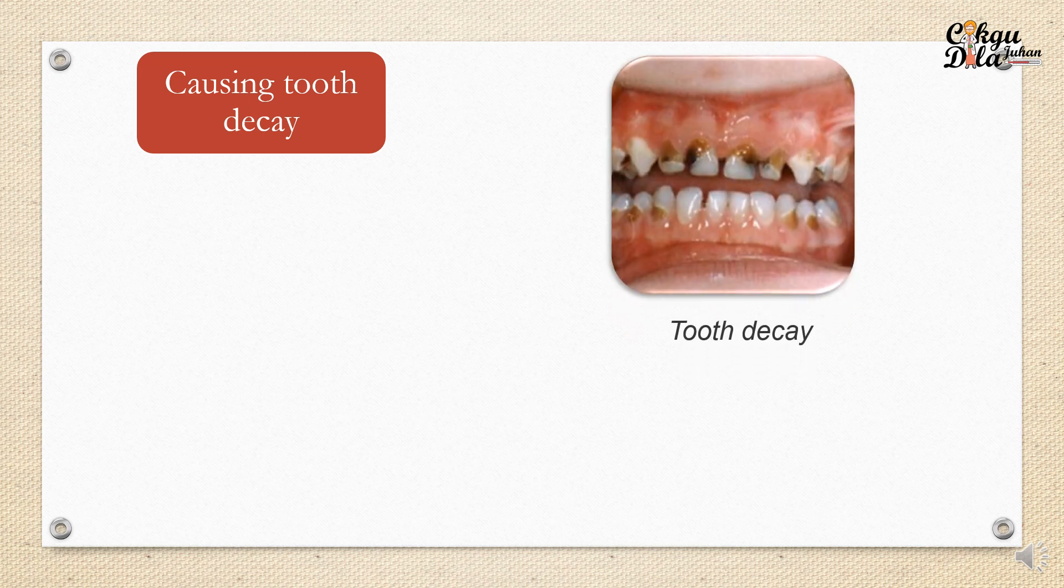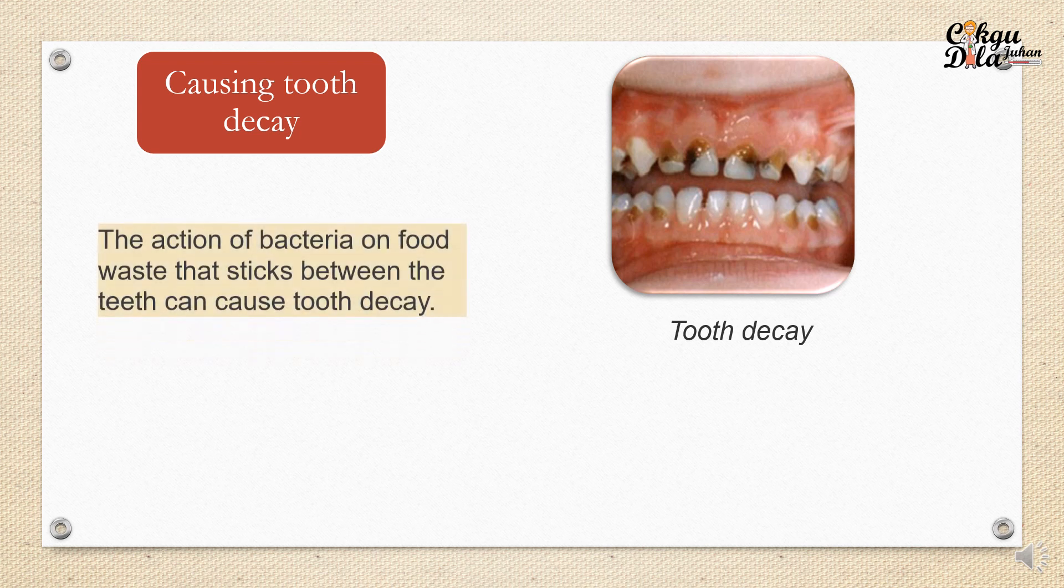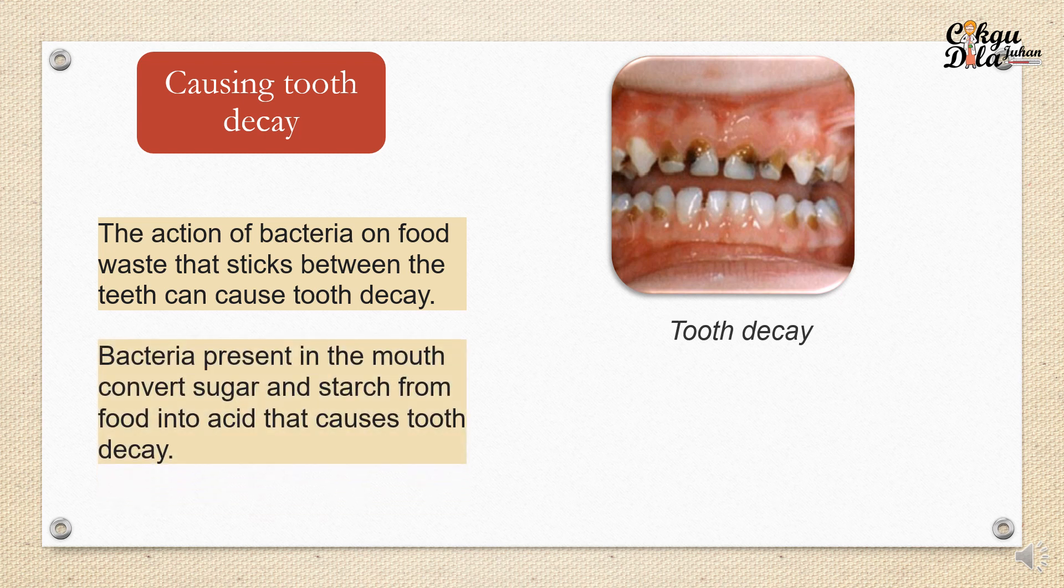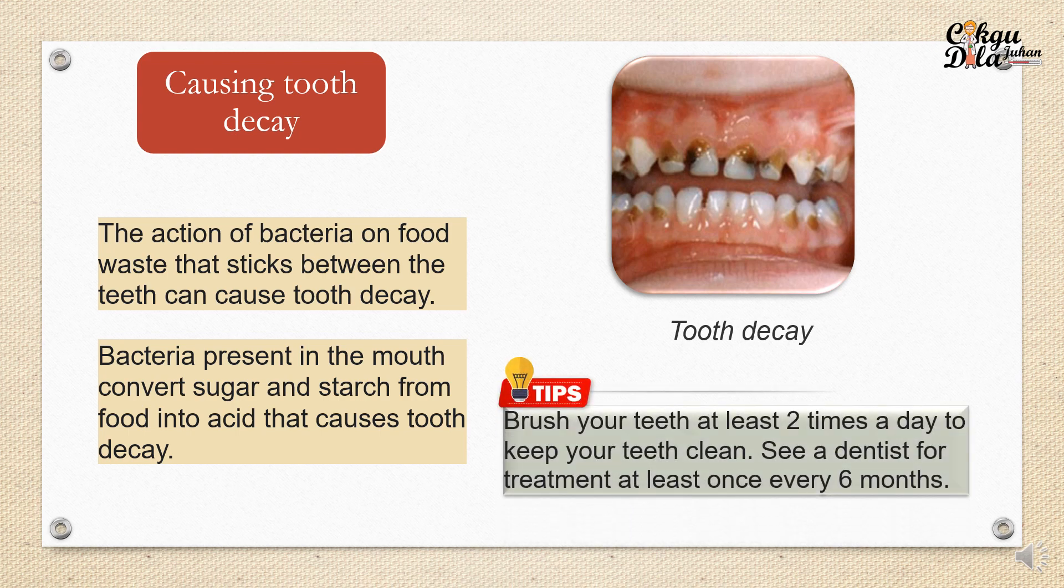The harmful effect of microorganisms includes causing tooth decay. We usually see this kind of tooth decay. What happens actually to the tooth is the action of bacteria on food waste that sticks between the teeth can cause tooth decay. So it is important for us to brush our teeth. Bacteria present in the mouth convert sugar and starch from food into acid that causes tooth decay. Actually our toothpaste is alkaline, so it helps to neutralize the acid in our mouth. Remember we need to brush our teeth at least twice a day to keep our mouth clean, and we also need to see a dentist for treatment at least every six months.